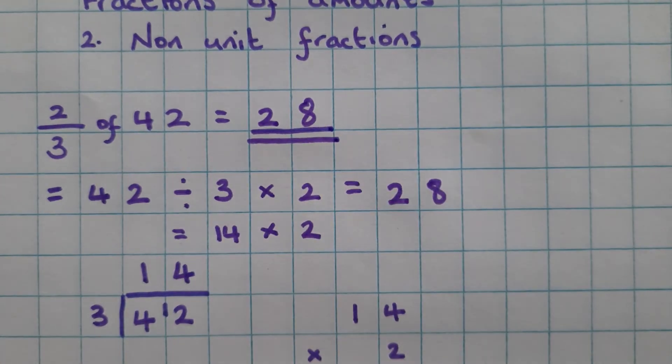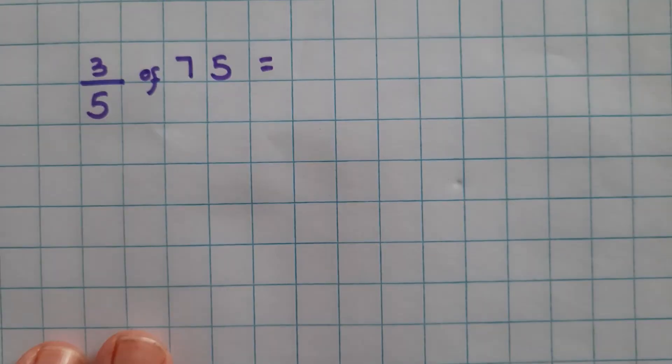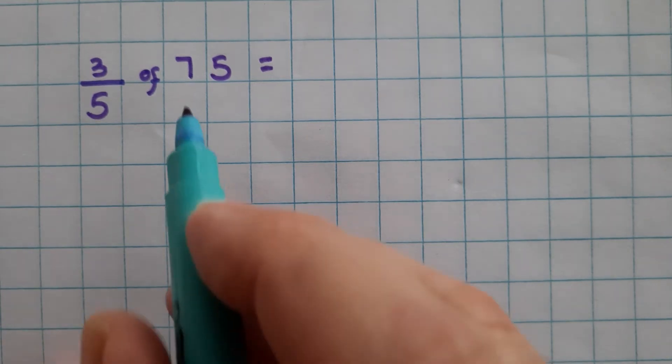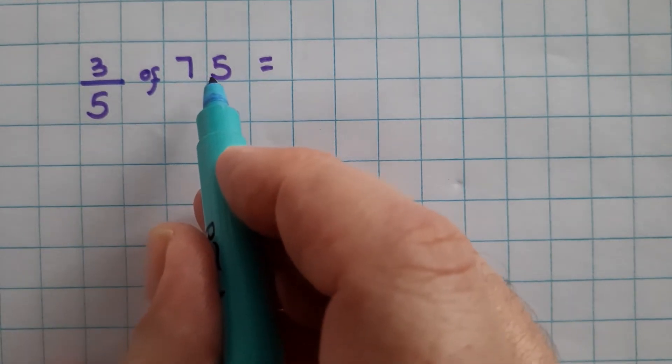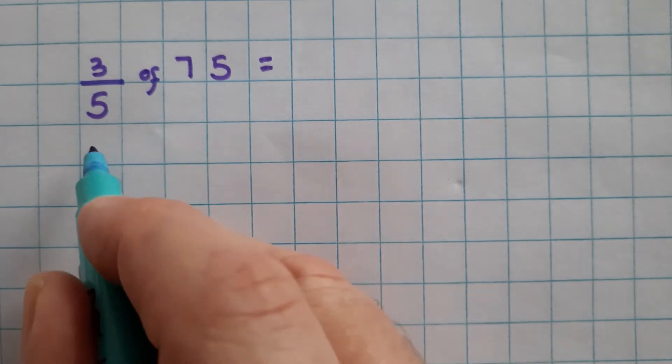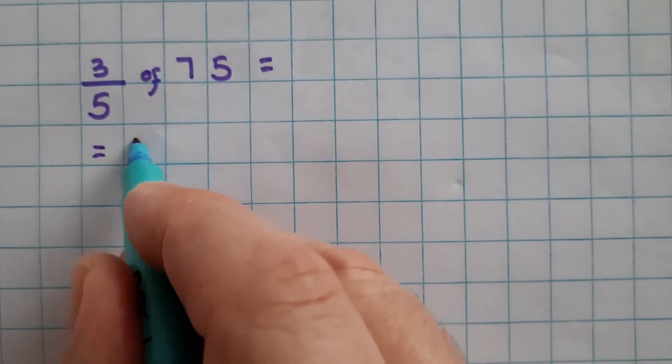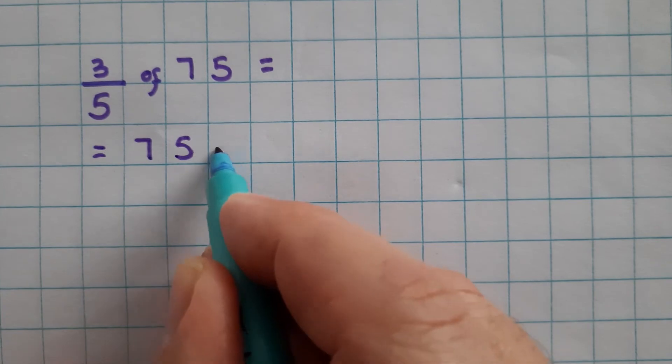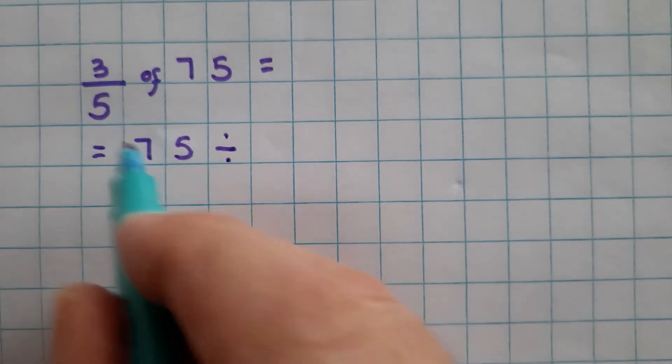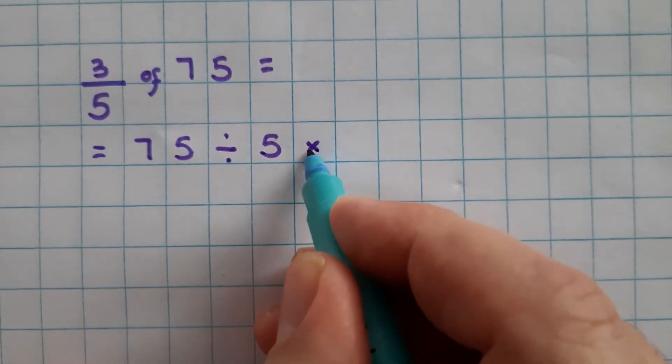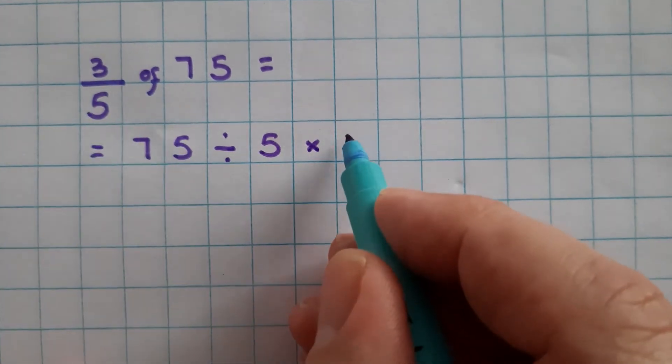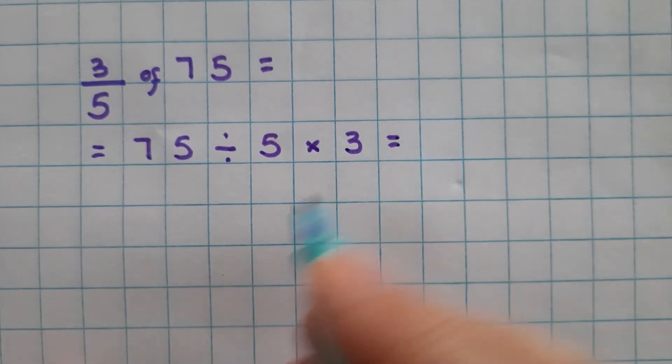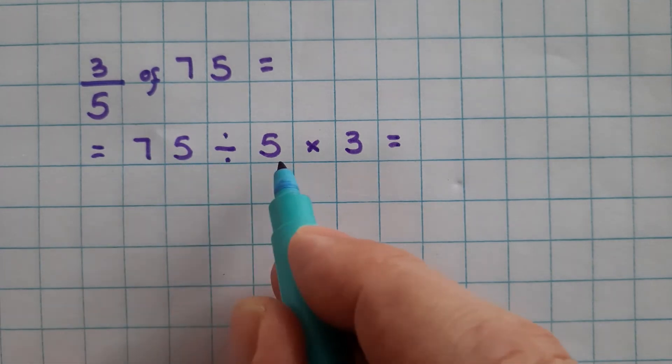So 2 thirds of 42 equals 28. Let's try that with another example. 3 fifths of 75. Well 3 fifths of 75 is the same as 75, the amount, divided by 5, the denominator, multiplied by 3, the numerator.